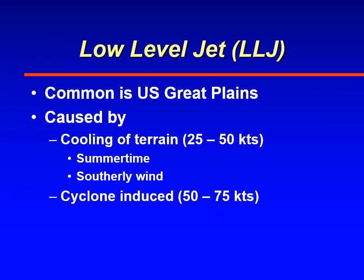The low-level jet stream is very common in the central United States — the southern plains, central plains, and all the way up into the northern plains. There are two causes. One is the cooling at night as the sun goes down; as a result, the wind decouples and is not affected by friction as much anymore. Also, the terrain cools off to the west, setting up a pressure gradient that causes a strong southerly wind.